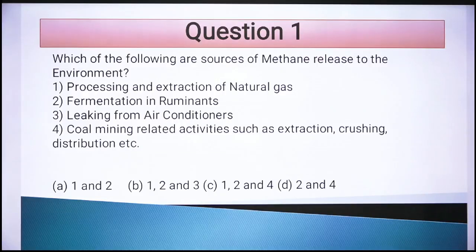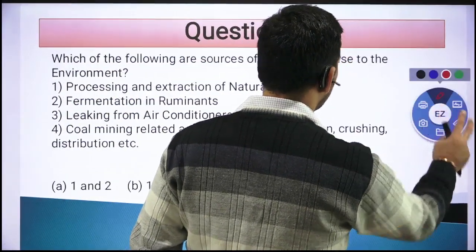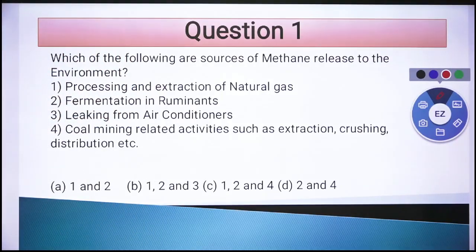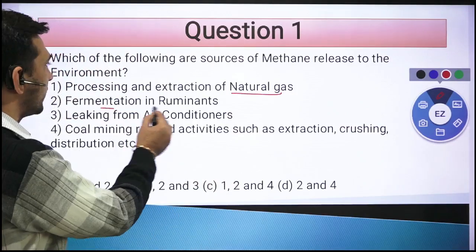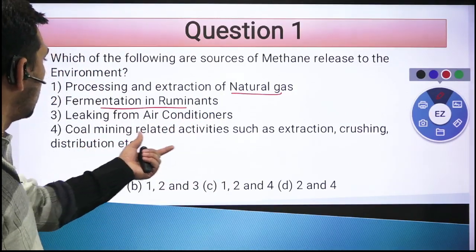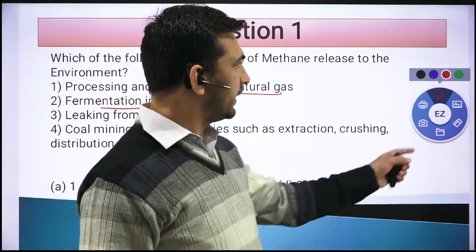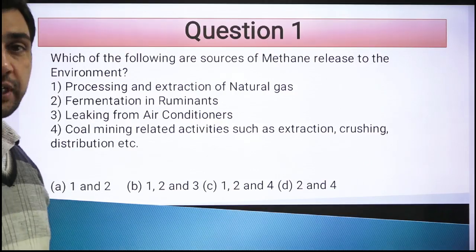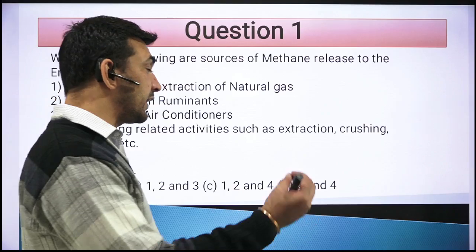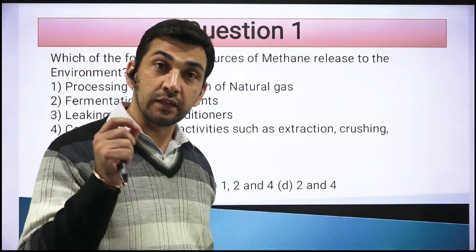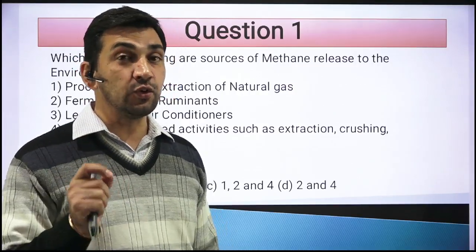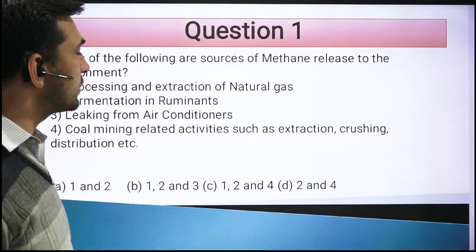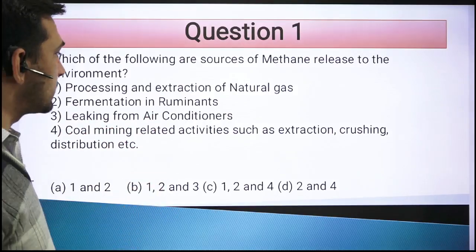Here we have the first question. The question asks: which of the following are the sources of methane release into the environment? The four options are: processing and extraction of natural gas; fermentation in the ruminants; leaking from air conditioners; and coal mining related activities. If you know where methane comes from, you can figure out that statement 3 — leaking from air conditioners — is not correct. That means the correct answer is option C.